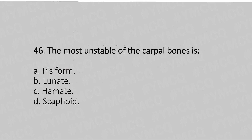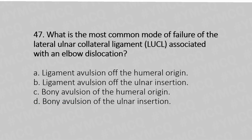Now let's move to question number 46. The most unstable of the carpal bones is: option A, pisiform; option B, lunate; option C, hamate; option D, scaphoid. And the answer is option D, scaphoid.